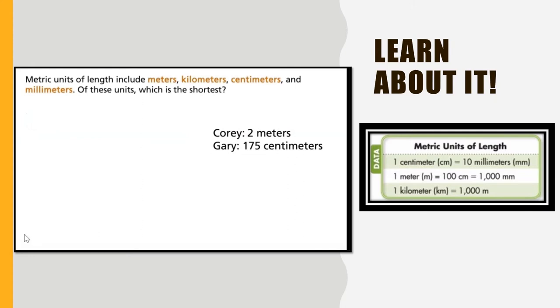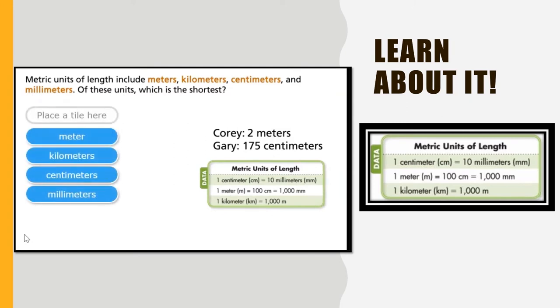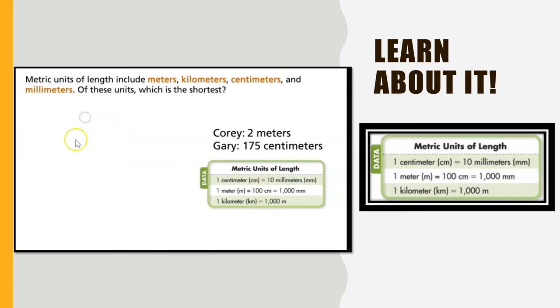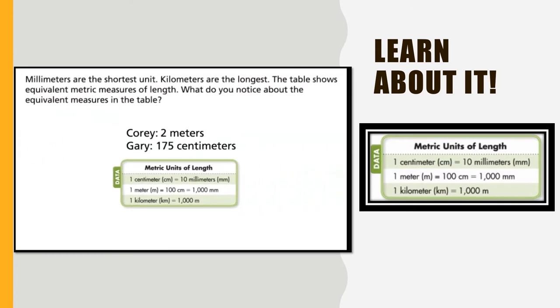The metric units of length include meters, kilometers, centimeters, and millimeters. Of these units, which is the shortest? Select your answer. Based on our chart here, it looks like the smallest unit or the shortest unit is the millimeter. Millimeters are the shortest unit. Kilometers are the longest.